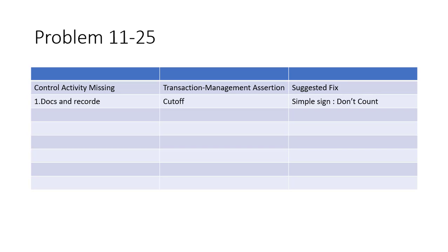For the first misstatement, the control activity missing was documents and records. The transaction management assertion that was affected was cut-off. The suggested fix is a simple sign that says 'do not count.' That's what they were missing — if they counted something that shouldn't have been counted.